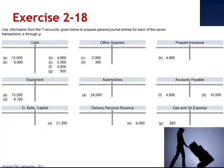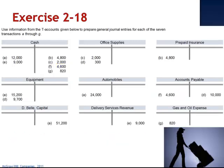Letter F includes a debit to accounts payable for $4,600 and a credit to cash. The company paid $4,600 in cash toward accounts payable.